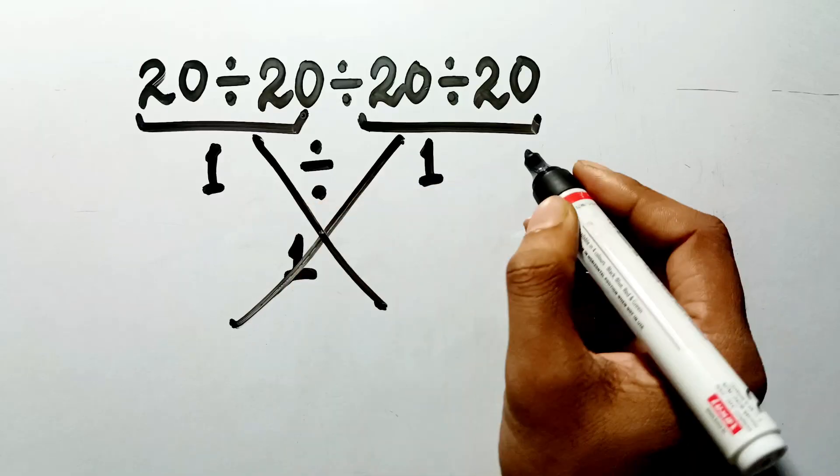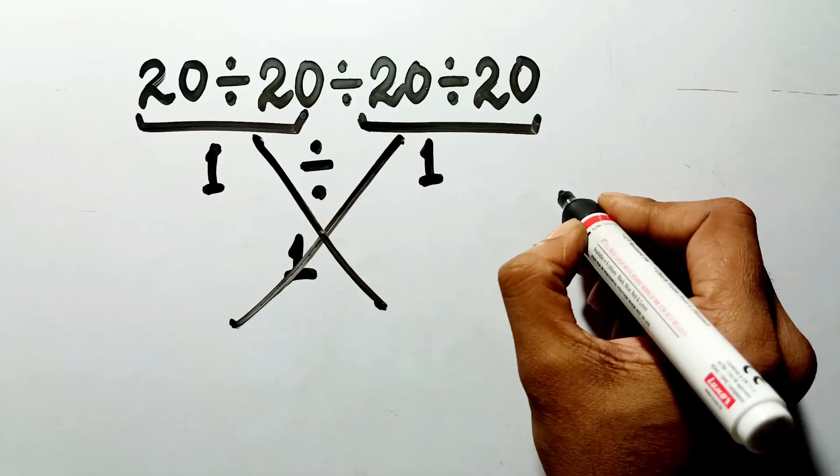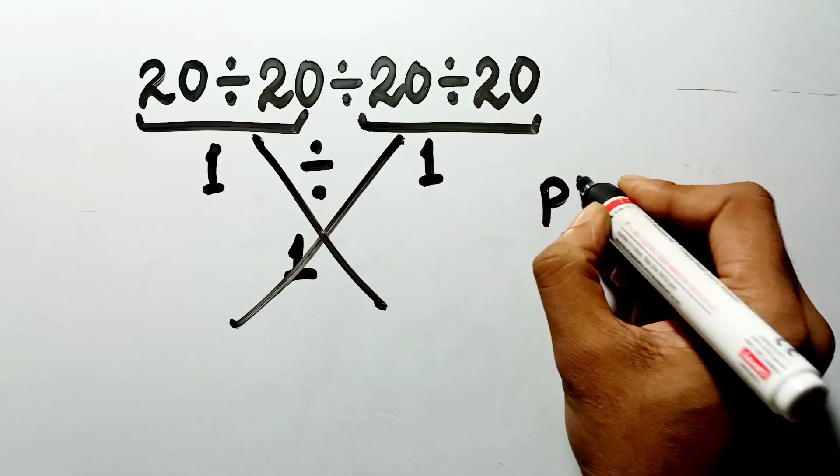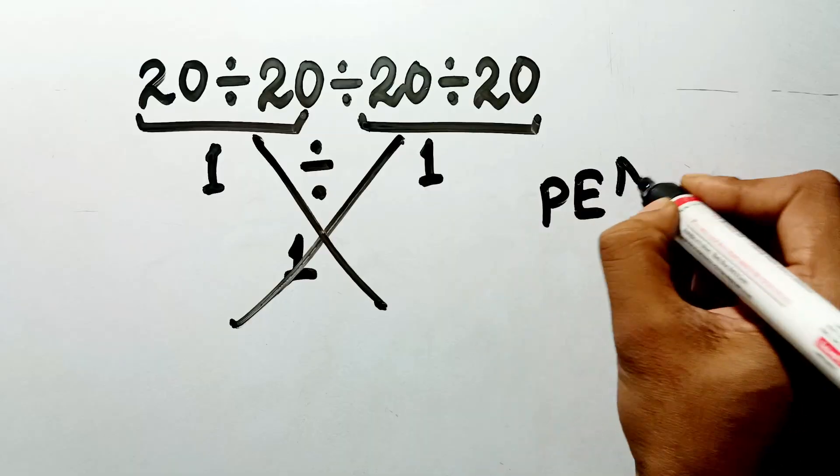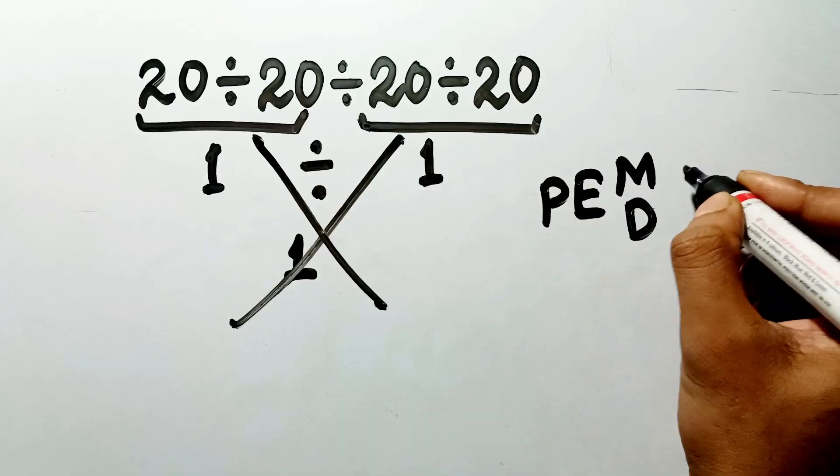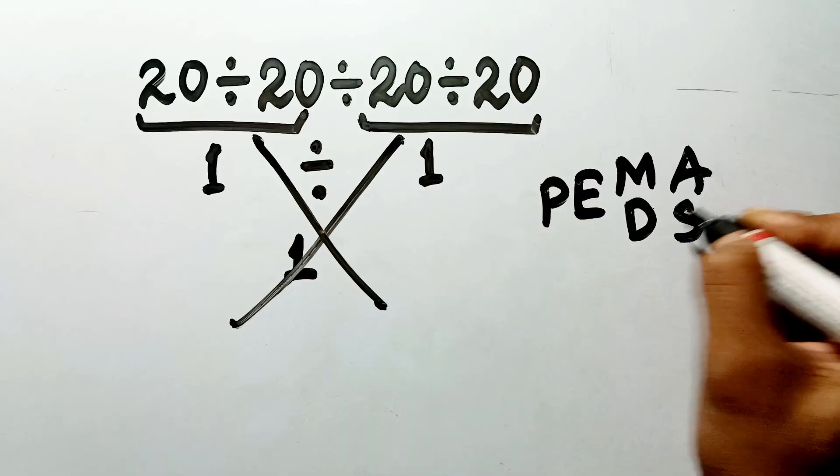because, according to the order of operations, first we have to do parentheses, then exponents, then multiplication or division, and then finally addition or subtraction.